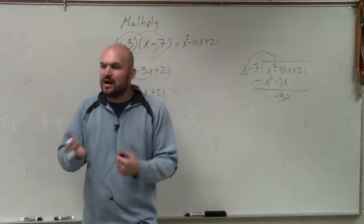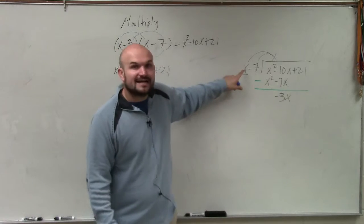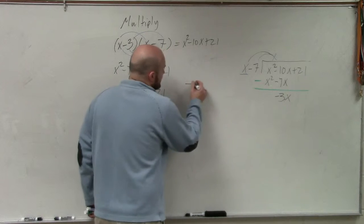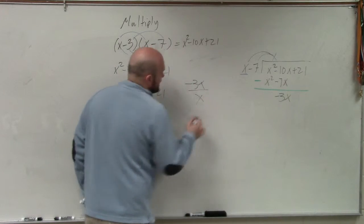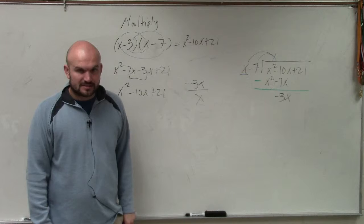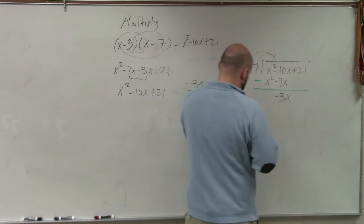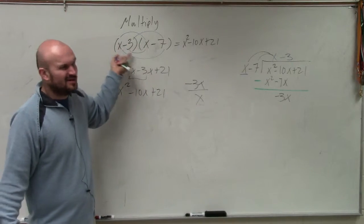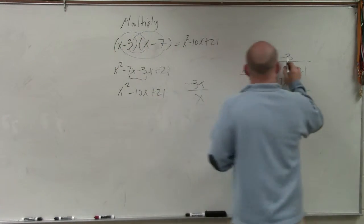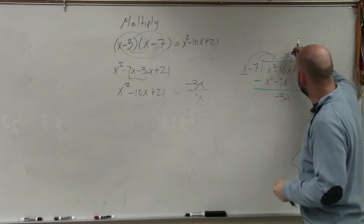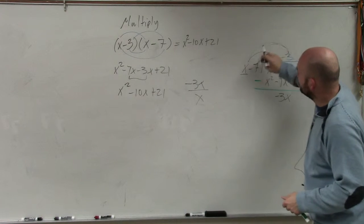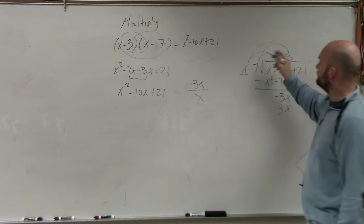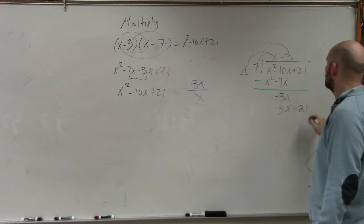Now, we do the same process over and over again. x divides into negative 3x, how many times? Negative 3x divided by x. How many times is x divided into negative 3x? Negative 3 times. Negative 3 times, right? Which we already know, guys, the answer's right up there, right? You already know the answer. Then we just take negative 3, and now we multiply negative 3 times x and negative 3 times negative 7. Negative 3 times x is a negative 3x. Negative 3 times negative 7 is a positive 21.